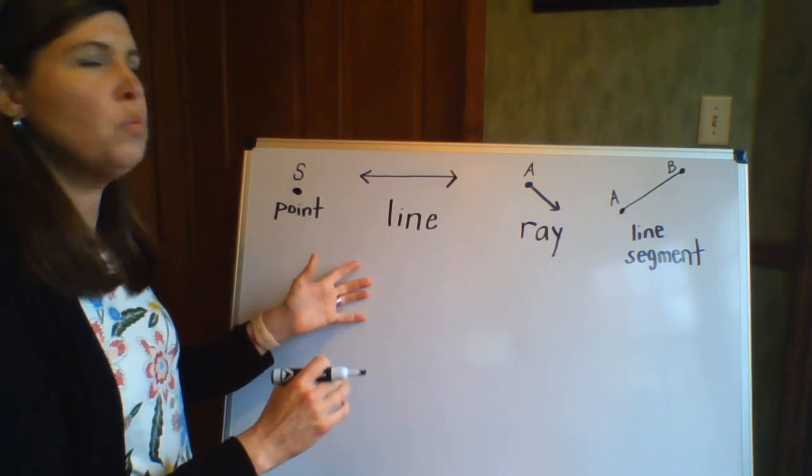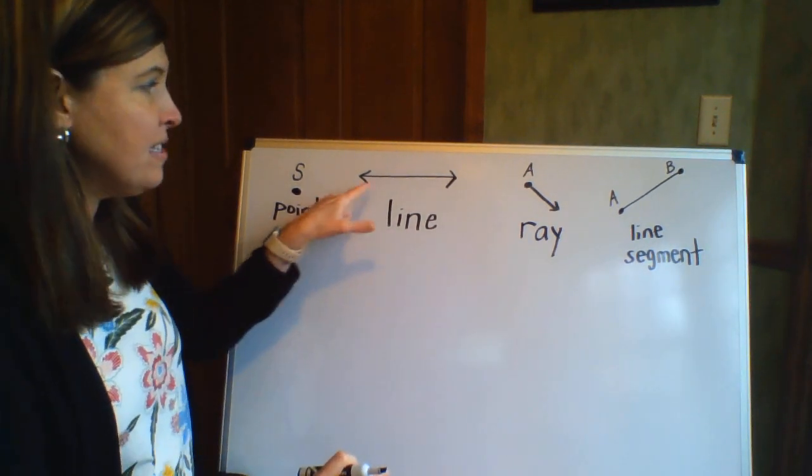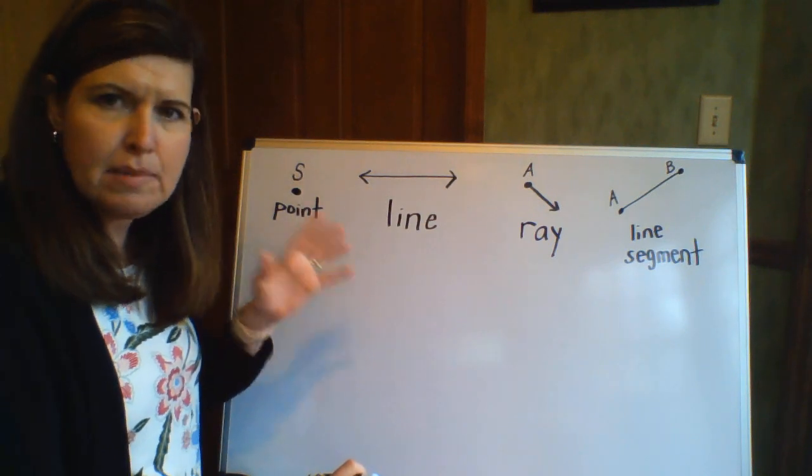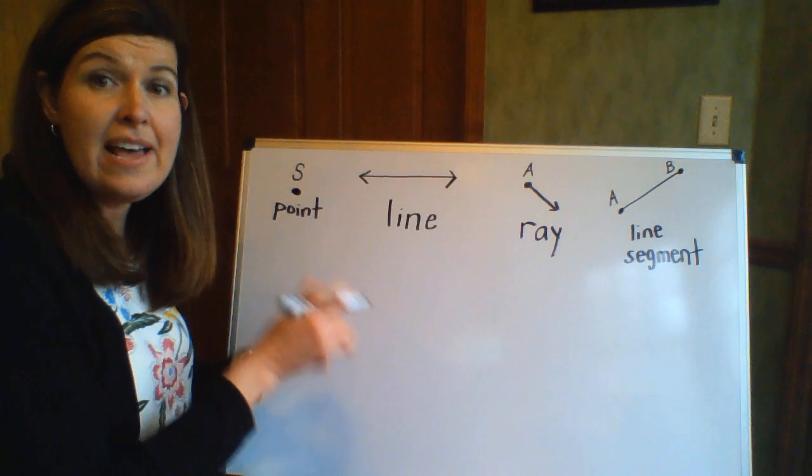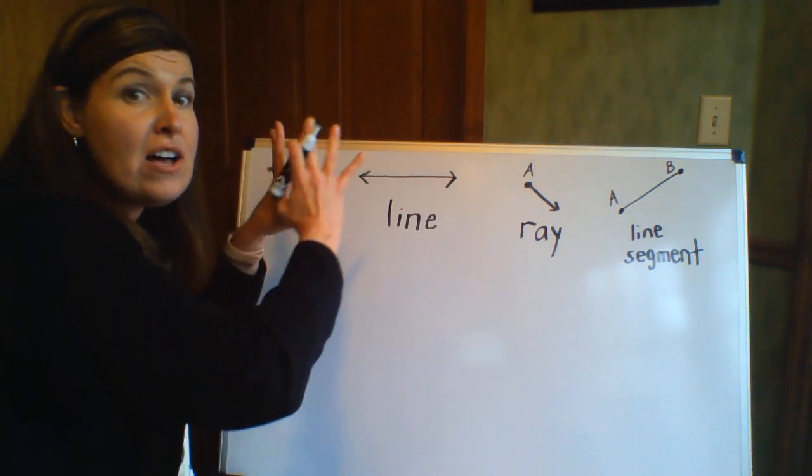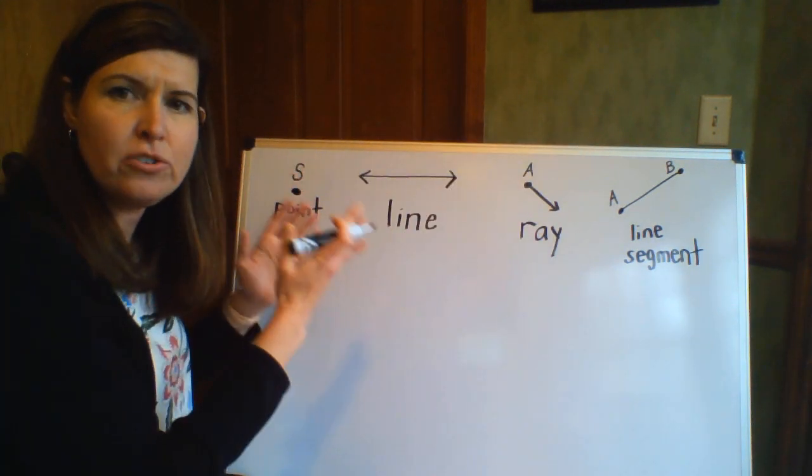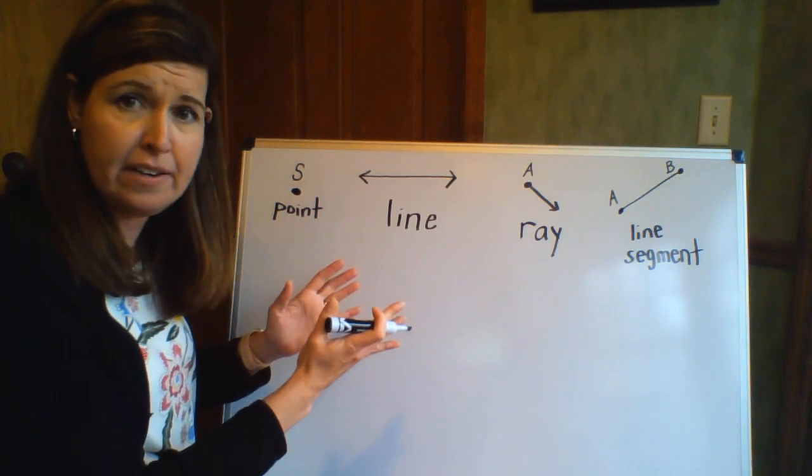So the next thing is what a line is. Now this is a line, and I want you to notice that there's something special about these lines. At the end they both have arrows. That means it goes on and on and on. There's no end or stopping point with this line.